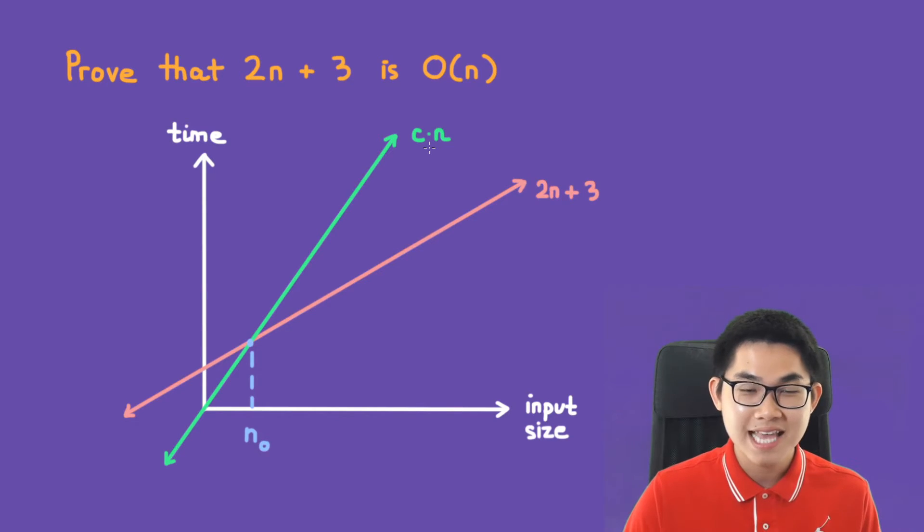c is just a number that grows faster than our red line. So all we have to do is to find one function c times n that grows faster than this line. And of course you're going to intersect here and this point is called n naught.